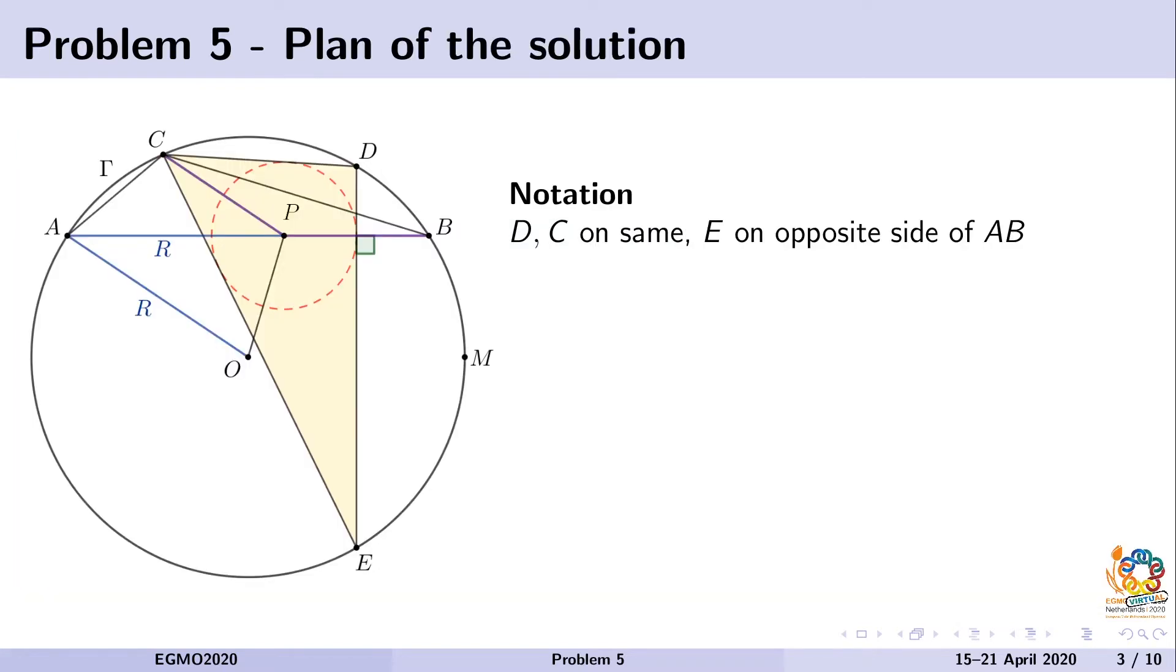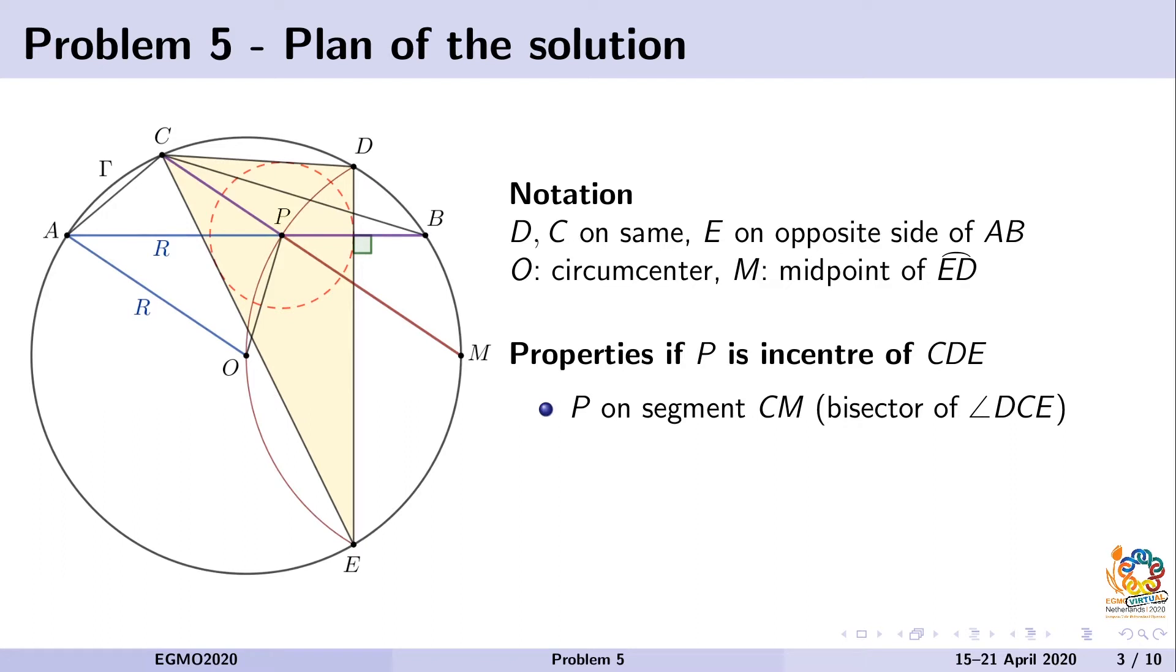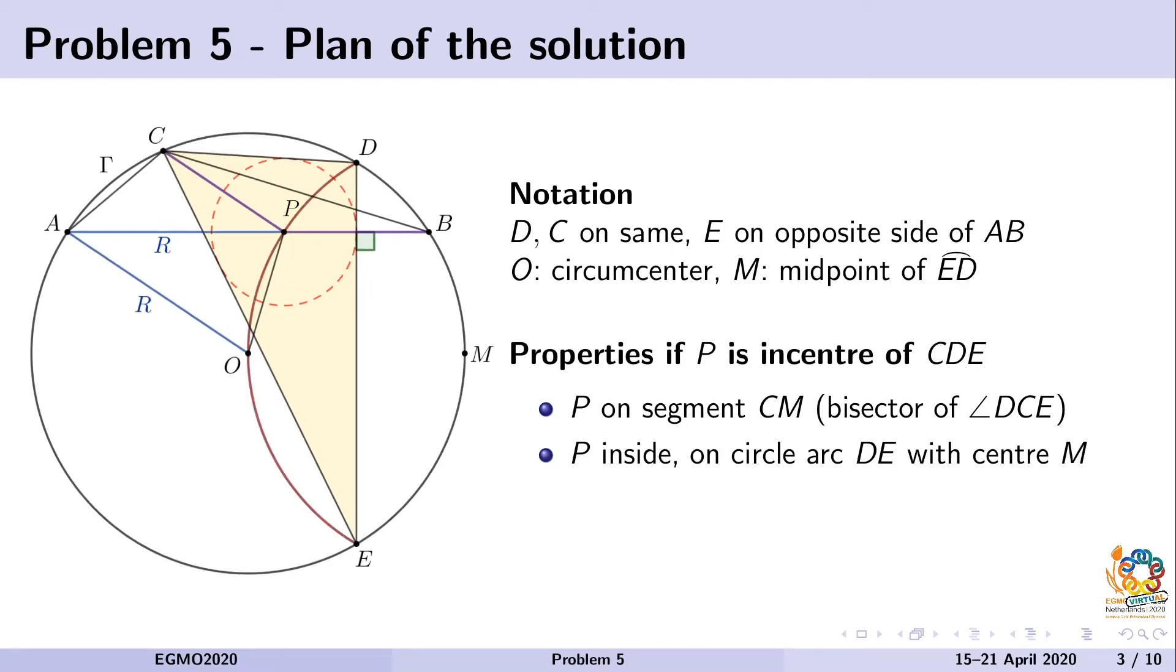In our solution, we use supplementary point M, which is the middle of arc EBD of circle gamma. To prove that P is the incenter, we show two properties it should satisfy: first, it lies on the bisector of angle ECD, in particular on CM; and also that it lies on a circle with center M which goes through points E, O, D. These two properties determine one point, and if P satisfies both of them, it will be exactly the incenter.